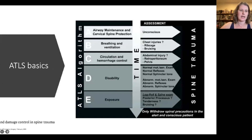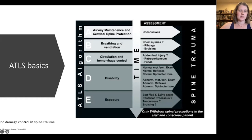In ATLS: A is for airway, B is breathing and ventilation, C is for circulation and hemorrhage control, D is disability — which includes your neurological exam — and E is exposure, including looking for other injuries that may be associated.